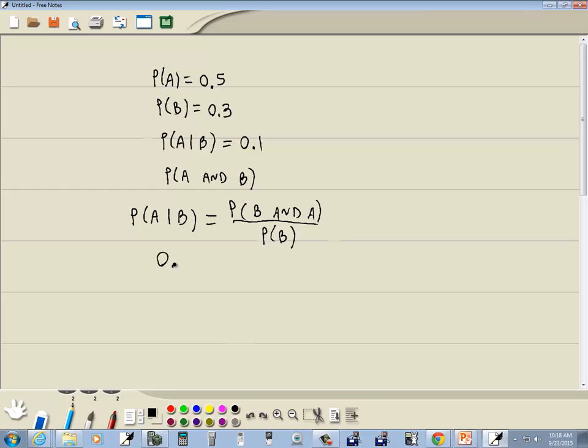So I've got 0.1 there. Probability of B and A, that's what we're trying to find. And then probability of B, which was 0.3. Now I want to get the probability of B and A by itself, so we're going to multiply both sides by 0.3.